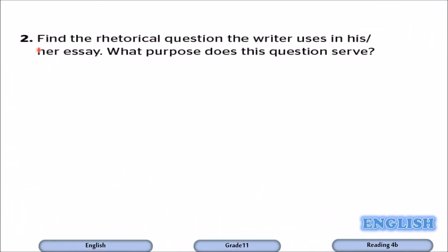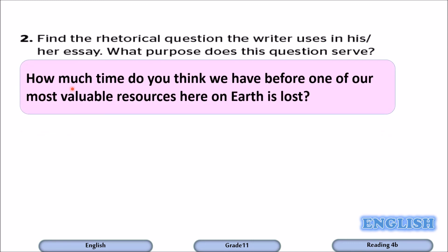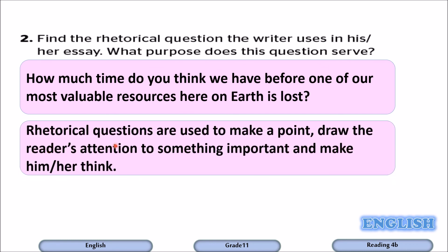Question number two: find the rhetorical question. A rhetorical question is one that doesn't require an answer — the answer is implied. The rhetorical question is: how much time do we think we have before one of our most valuable resources here on earth is lost? It doesn't need an answer. Rhetorical questions are used to make a point, draw the reader's attention to something important, and make him or her think.